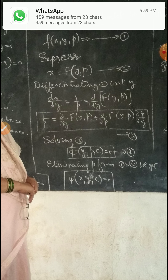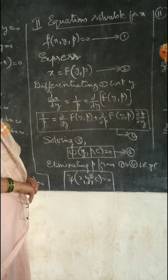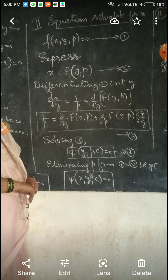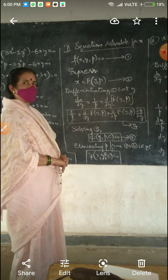Now the second method — equation soluble for X. Consider the given differential equation F(X, Y, P) = 0. Express X as a function of Y and P: X = F(Y, P). Differentiating with respect to Y, we get dX/dY = 1/P = (∂F/∂Y) + (∂F/∂P)·(dP/dY). Solving this as equation 3 gives φ(Y, P, C) = 0. Eliminating P from equations 1 and 4, we get ψ(X, Y, C) = 0, which is the solution.